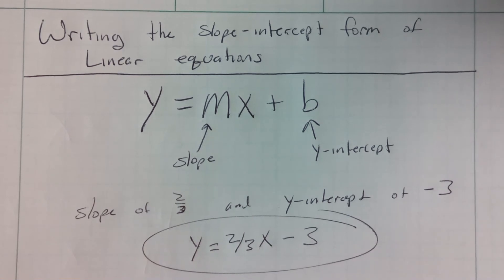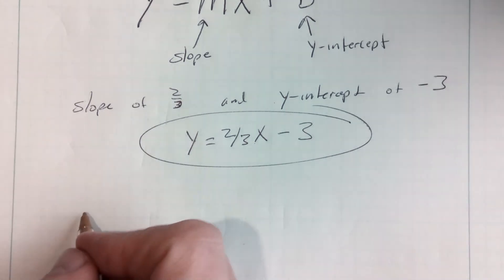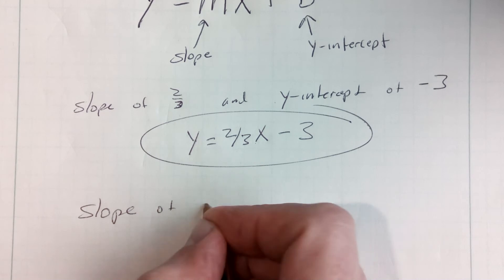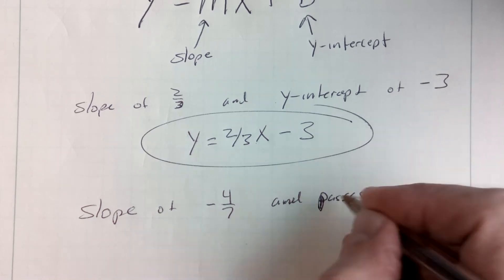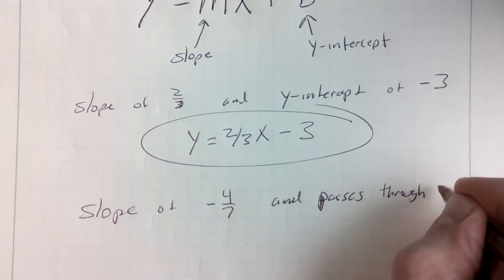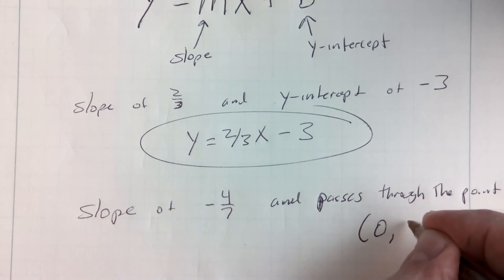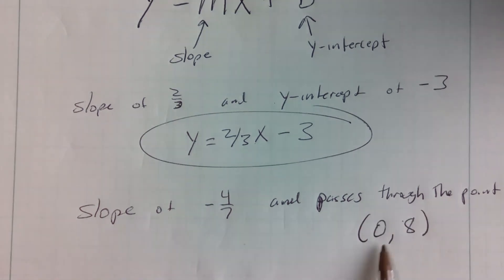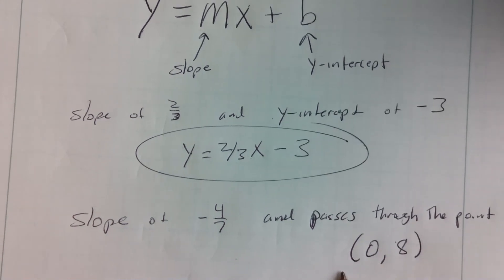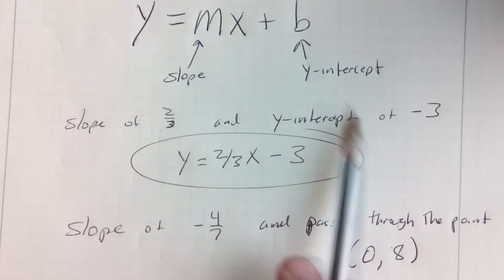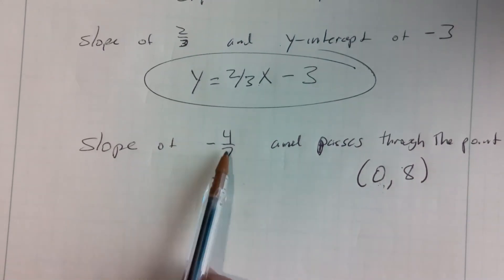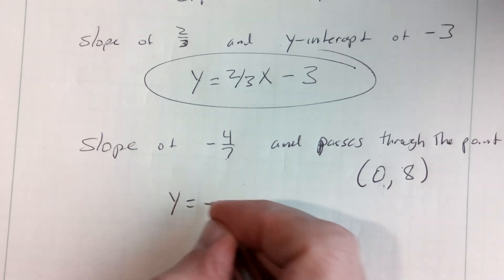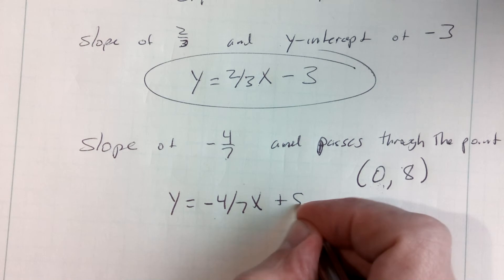Now they might also give them to you almost as simple, where they say: write the equation of a line that has a slope of negative 4 sevenths and passes through the point (0, 8). Well, if the x value is 0 in the point they give you, the y value is the y-intercept, because the y-intercept always has an x value of 0. So they gave you the slope and the b value. So y equals negative 4/7x plus 8, and you've written the equation.